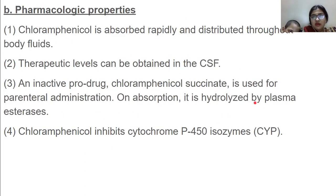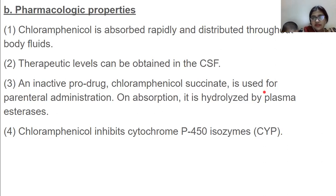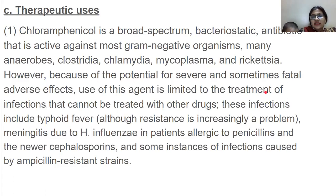Regarding pharmacological properties, chloramphenicol is absorbed rapidly and distributed throughout body fluids; therapeutic levels can be obtained in the CSF. Chloramphenicol succinate is used for parenteral administration — on absorption it is hydrolyzed by plasma esterases. It inhibits cytochrome P450 isozymes. Chloramphenicol is a broad-spectrum bacteriostatic antibiotic active against most gram-negative organisms, many anaerobes, Clostridia, Chlamydia, Mycoplasma, and Rickettsia.